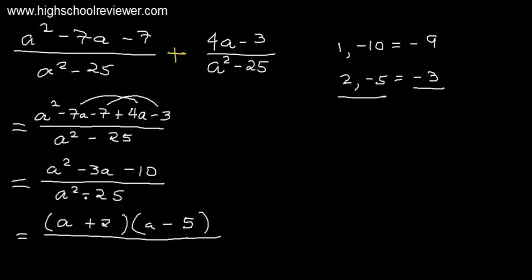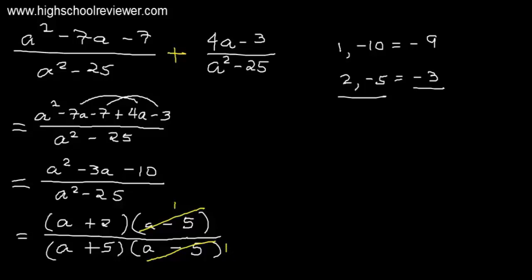Now let's factor the denominator a squared minus 25. The factor of a squared is a multiplied by a. Since 25 is a perfect square and the sign is negative, this factors as a plus 5 times a minus 5. Looking at the numerator and denominator, we can cancel out the quantity of a minus 5, since it equals 1. What is left is a plus 2 all over a plus 5. Therefore, a plus 2 all over a plus 5 is our final answer.